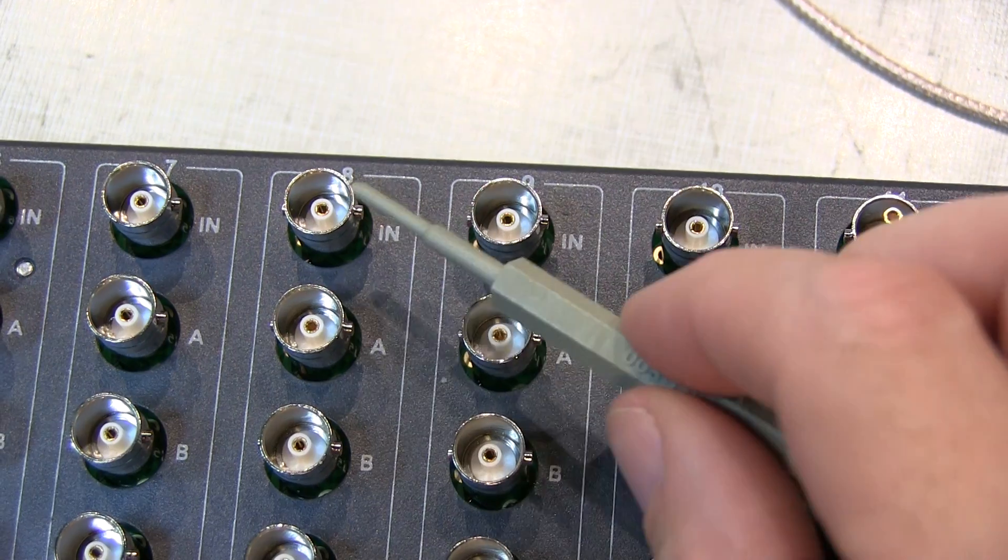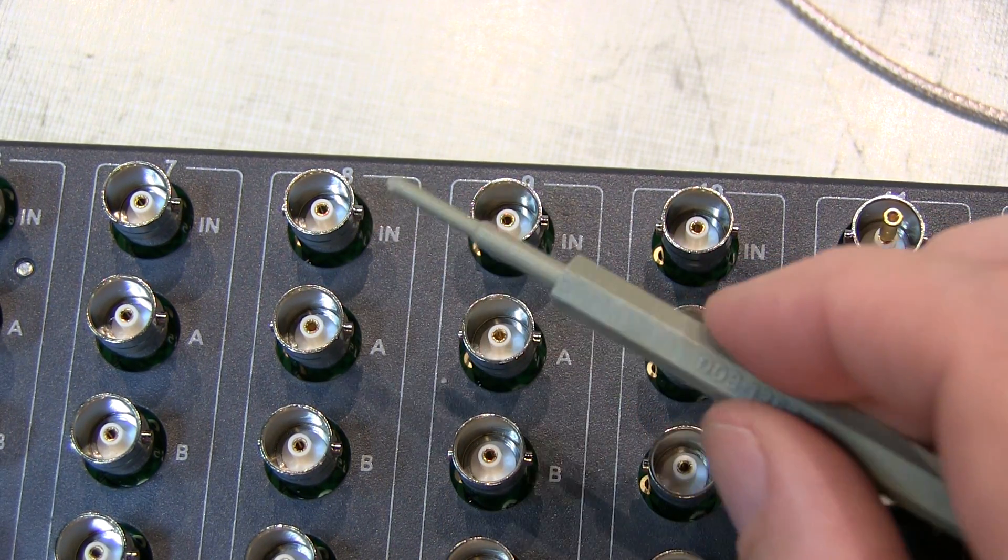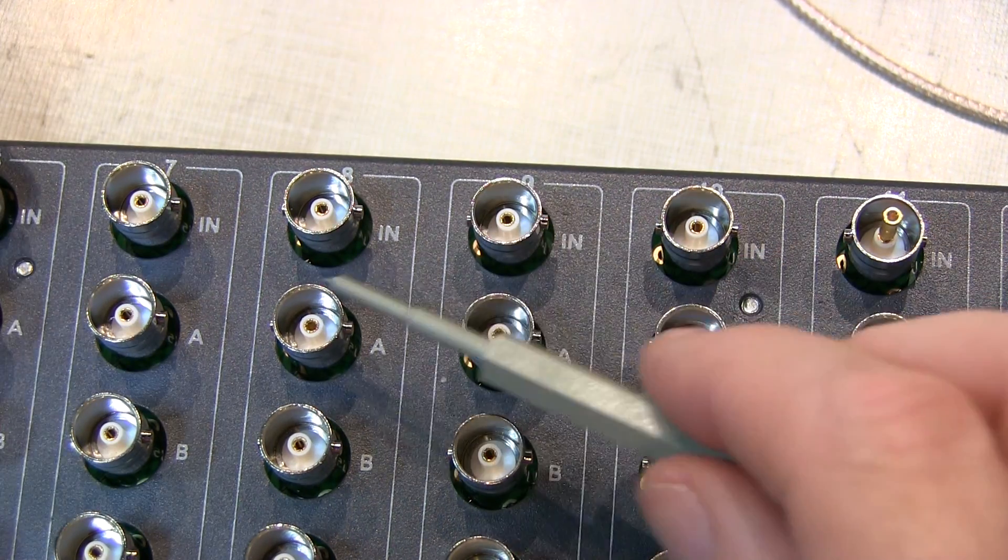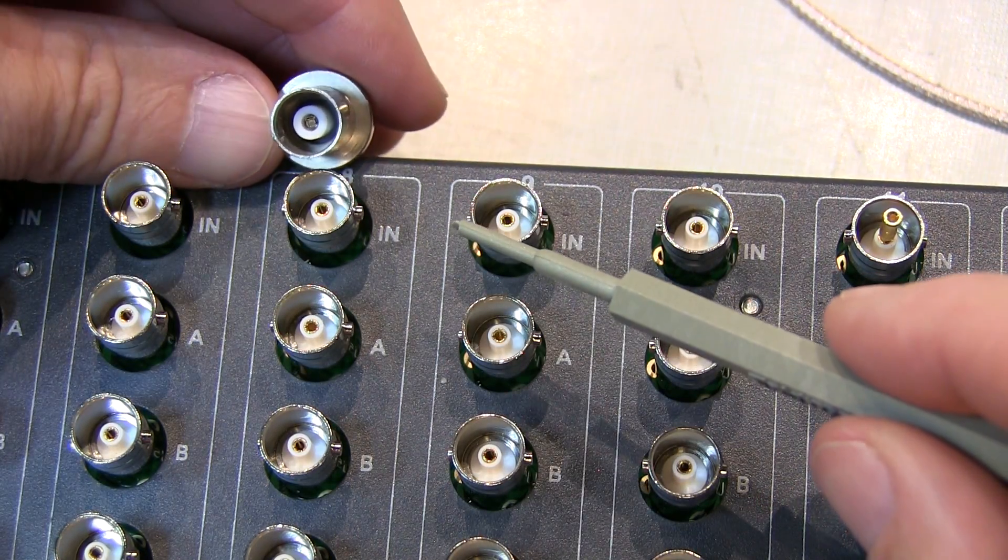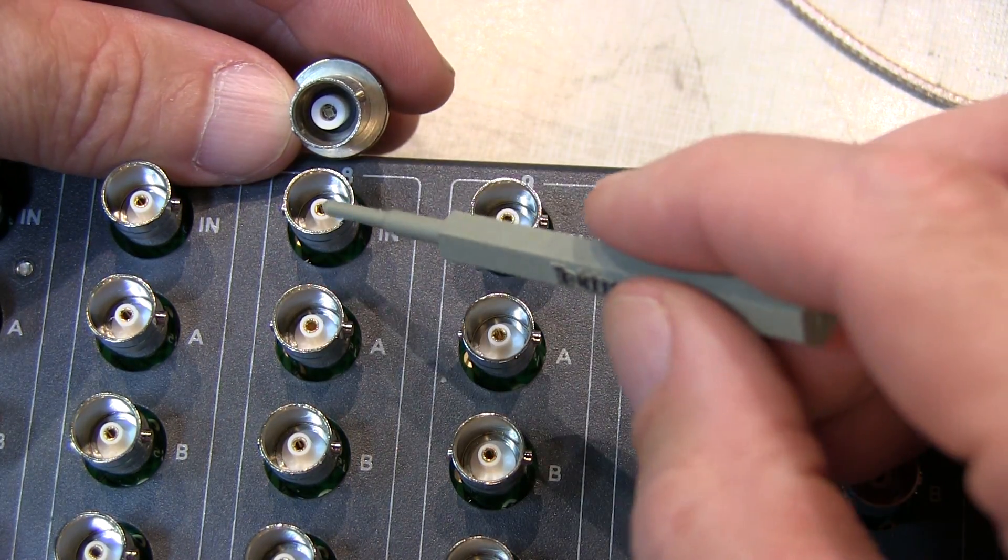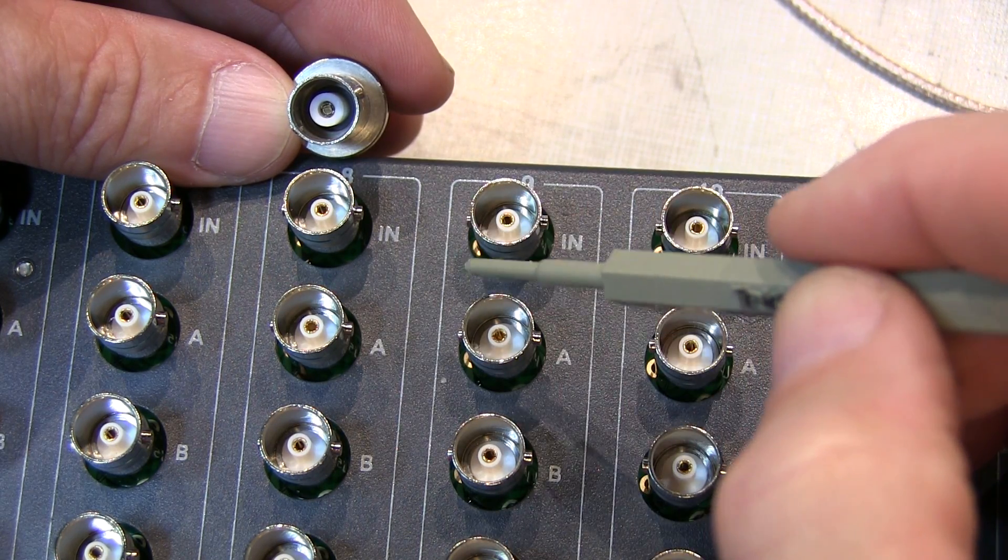Now most RF systems that use BNC connectors are a 50 ohm impedance, while most video systems that use the BNCs are 75 ohm. Now there are some physical differences between the two, most notably with the insulator material around the center conductor.